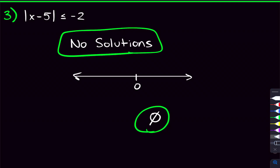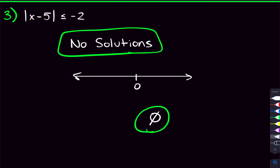The takeaway here: this might catch you off guard. When do you need to care about the no solutions case? Here's my tip: once you've isolated the absolute value, look at it and ask — does this inequality make sense? Is there no solutions, or is there infinite solutions, or is it just a regular inequality I can solve? That's what you'll have to check once you isolate the absolute value.